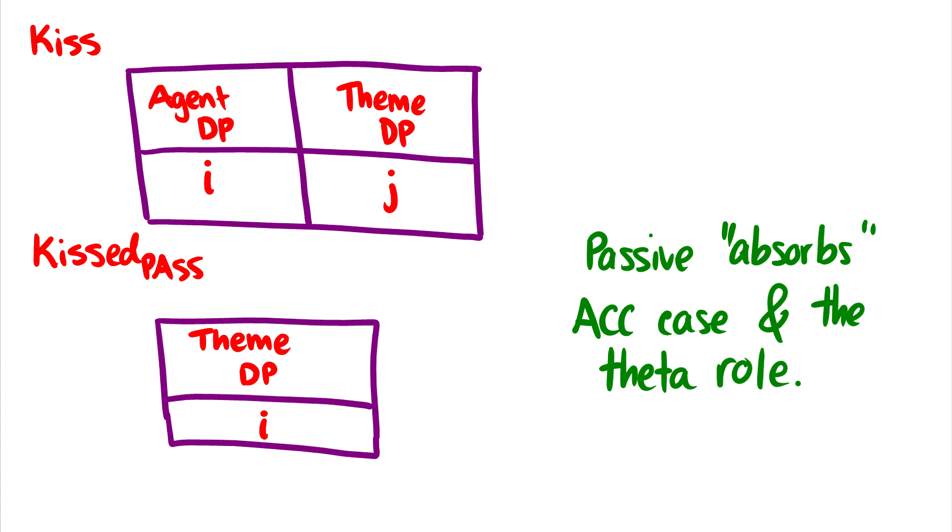Well, let's take a look at some theta grids for verbs. There's an active form of each verb and a passive form. For instance, the active of kiss takes an agent and a theme, like John kissed Mary. But the passive, Mary was kissed, only takes a theme. In this case, we can say that the passive absorbs accusative case and also the agent theta role.